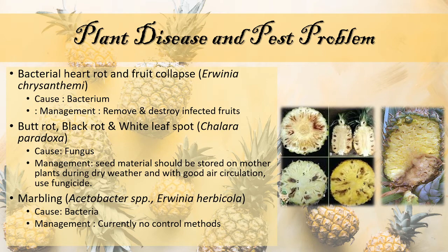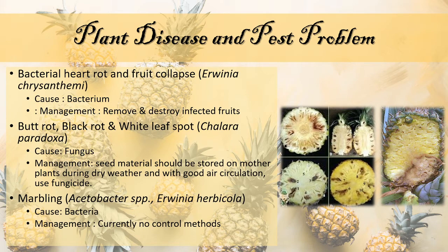The next disease is butt rot, black rot, and white leaf spot, which is caused by the fungus Chalara paradoxa. The management for this is that seed materials should be stored on the mother plants during dry weather and with good air circulation. Freshly removed seed material should be dipped in an appropriate fungicide within 12 hours of removal from the mother plant. Avoiding bruising and wounding of fruit during harvest also helps to reduce black rot, and harvested fruit should be dipped in an appropriate fungicide within 6 to 12 hours of harvest to prevent disease development during shipping.